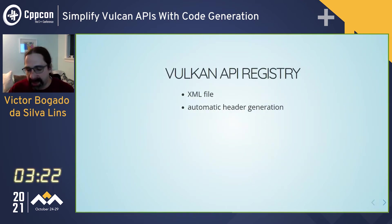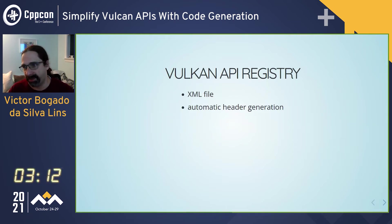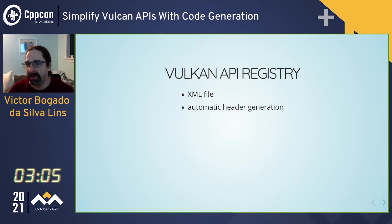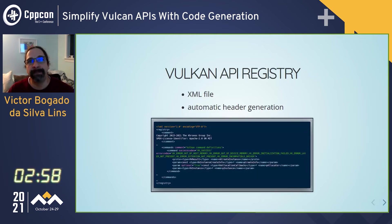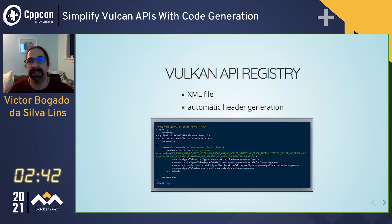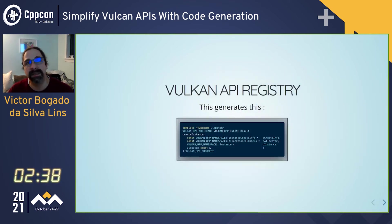At this point I was investigating a lot of things to discover why it wasn't working, and I found this API registry. It's an XML file that's apparently used to generate the headers for C and C++. And I said, wow, this is great. The headers look like this — and apparently those images are working. You can see here it's XML with a command: name is vkCreateInstance. And this generates, in the C++ files, this function.